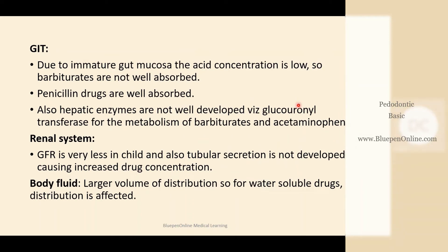The differences in the gastrointestinal tract are: due to immature gut mucosa, acid concentration is low, so barbiturates are not well absorbed, whereas penicillin drugs are well absorbed. Hepatic enzymes such as glucuronide transferase are not well developed for the metabolism of barbiturates and acetaminophen. In the renal system, glomerular filtration rate is very less in children, and tubular secretion is not fully developed, causing increased drug concentration. Regarding body fluid, the child has a larger volume of distribution, so for water-soluble drugs, distribution will be affected.